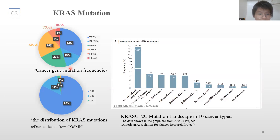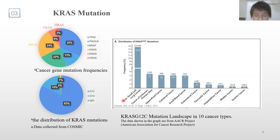The COSMIC database shows that among all RAS isoforms, KRAS is the most frequently mutated overall, and the vast majority of these mutations occur at G12. In the right graph, we can see the KRAS G12C mutation landscape across 10 cancer types. Overall, KRAS G12C mutations are most frequent in non-small cell lung cancer and colorectal cancer.